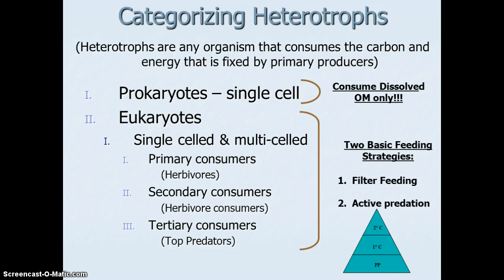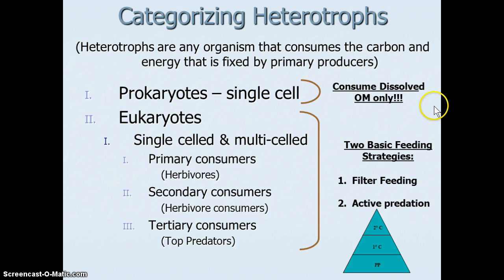When we categorize the heterotrophs, we have both prokaryotes and eukaryotes — single-celled versions of both that are the first-level consumers. We'll start with the prokaryotes. The most important take-home about those guys: prokaryotic consumers consume dissolved organic matter only.